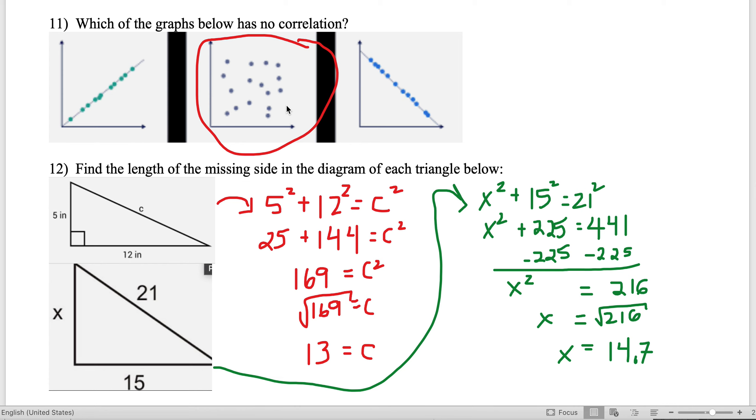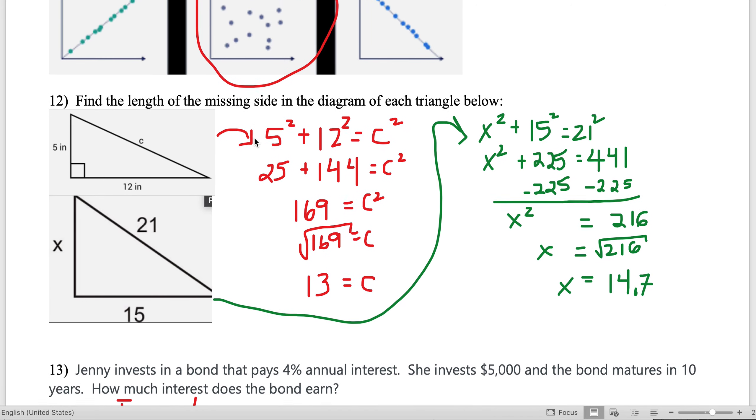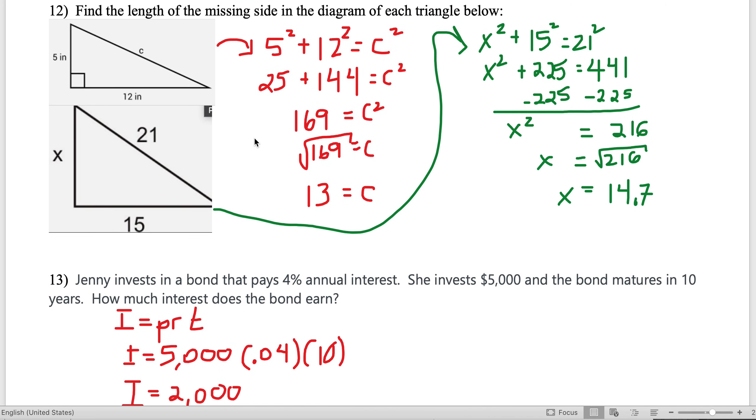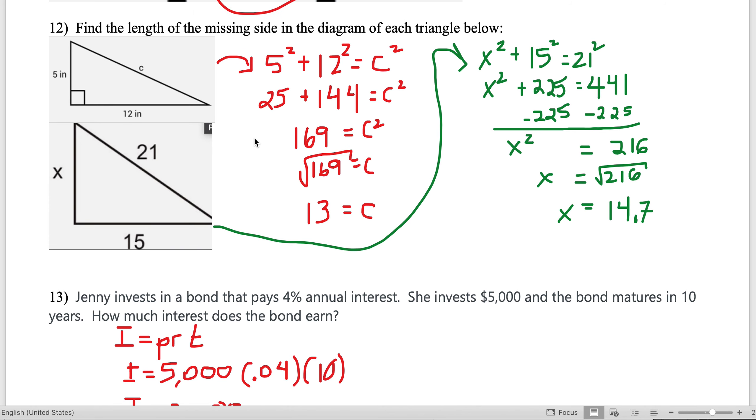Likewise with the positive graphs, the upper right graph's points are just a little tighter, so we gave that 0.9 and the one underneath 0.8. Which graph has no correlation? No correlation is when everything's spread out all over the place—there's no general trend up or down.